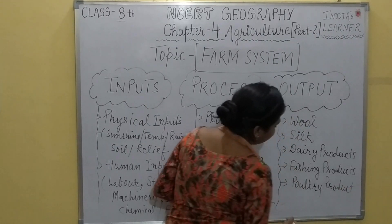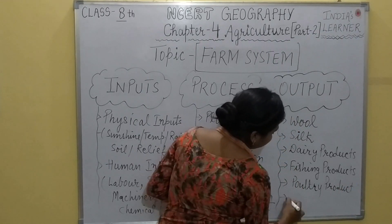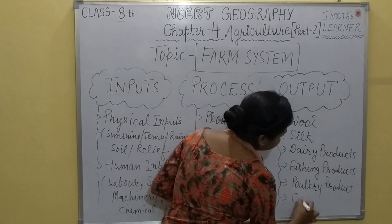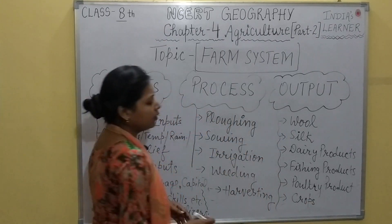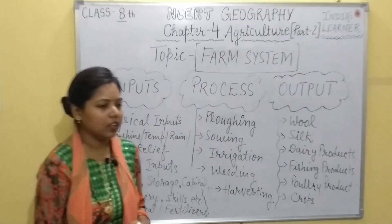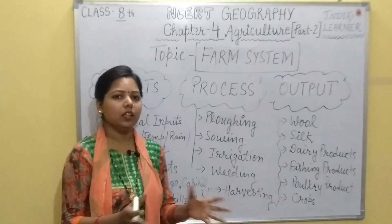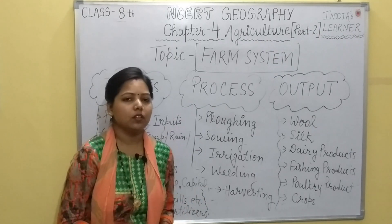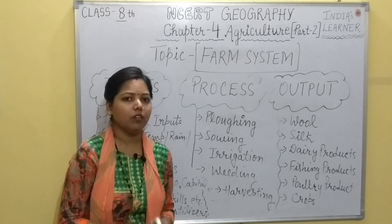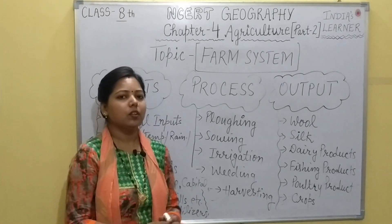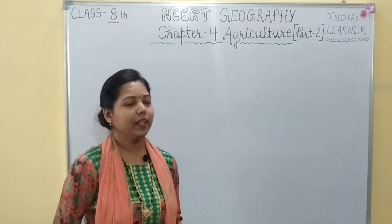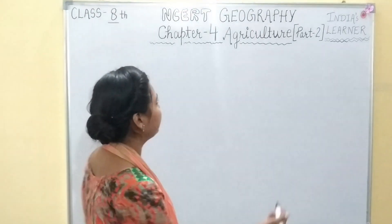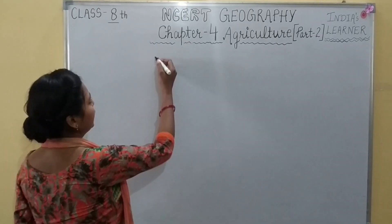Some outputs include wool in nomadic herding, products in poultry, and crops in crop production or the cultivation of different crops. Let us now discuss our next topic — Types of Agriculture.